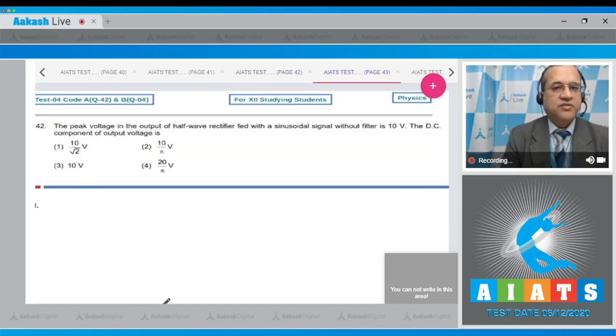Question number 42 says that peak voltage in the output of the half wave rectifier fed with the sinusoidal signal without filter is 10 volt. Find the DC component of the output voltage.